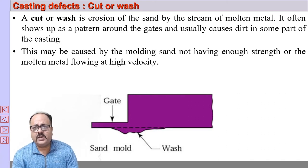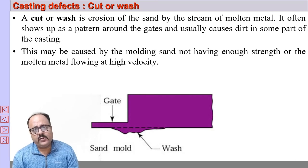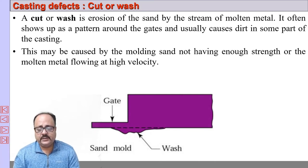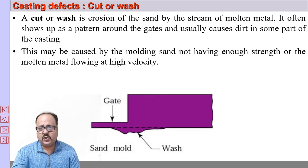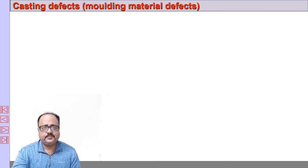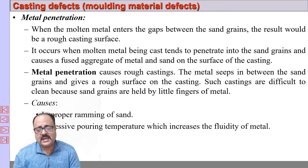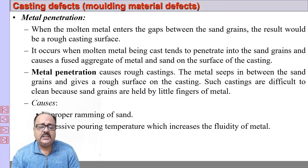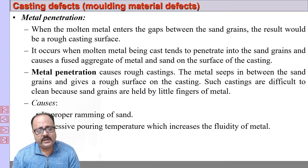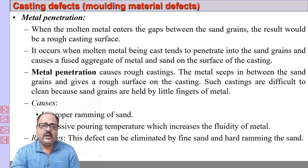Cut or wash: if the turbulent flow or velocity of the metal is very high, the flowing metal can wash away part of the molding sand with it — this is called cut or wash, i.e., erosion of the sand by the stream of molten metal. Then we have metal penetration: if the permeability or sand grain size is too high and the spacing between sand grains is large, the metal will penetrate the mold wall, resulting in a very rough surface. This is caused by improper ramming and excessive pouring temperature, which increases the fluidity of the molten metal.